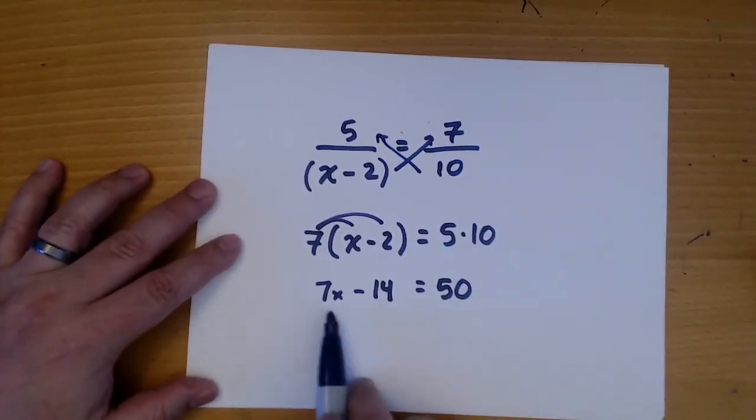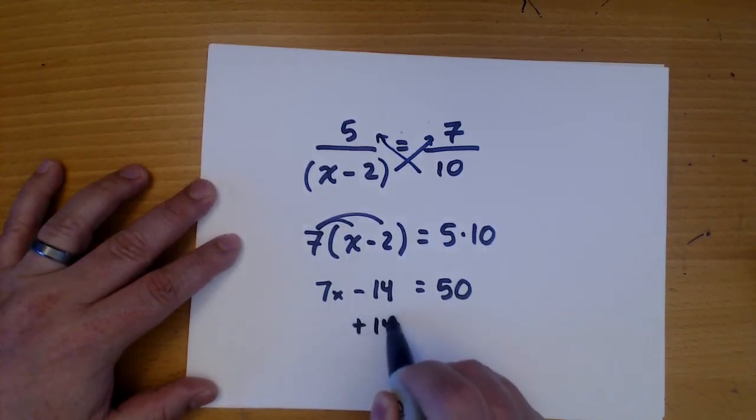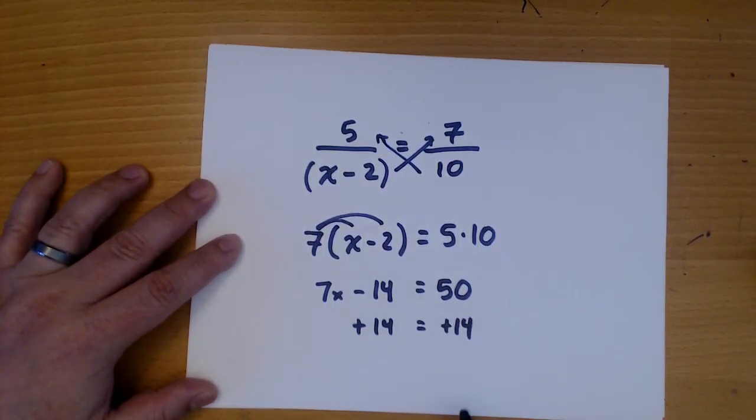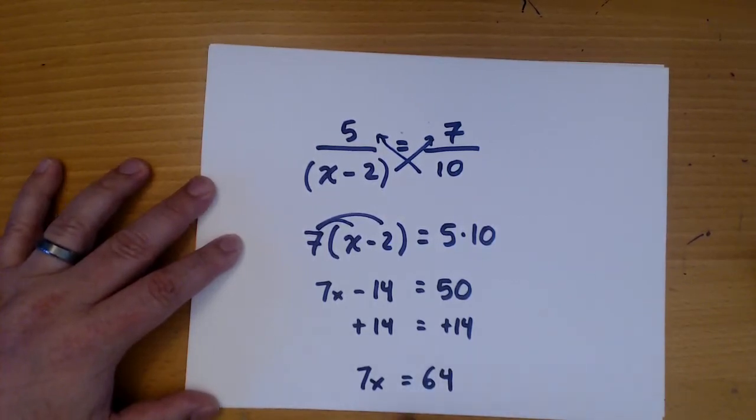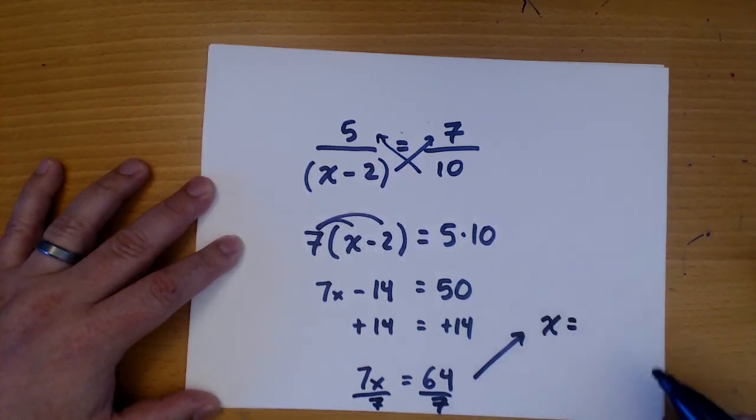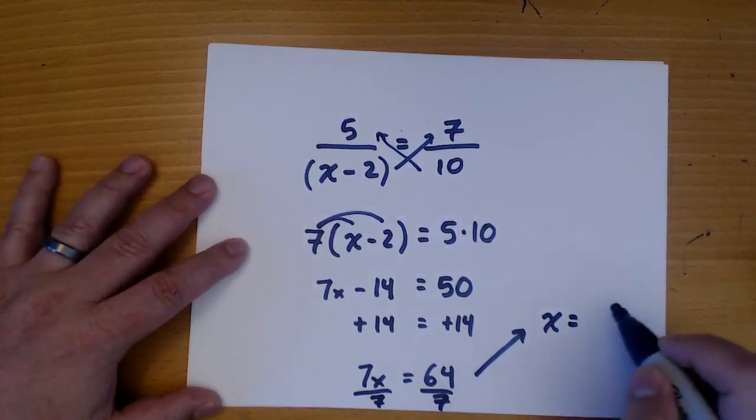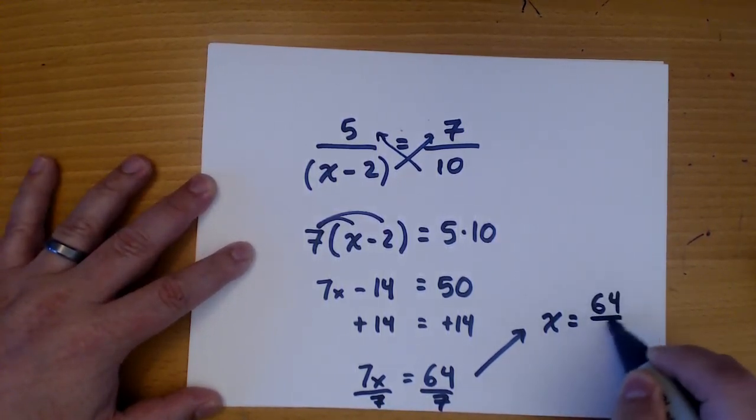Now we got to get rid of the 14. So it's currently a negative 14. So we're going to add 14 to both sides. And we get 7x is equal to 64. Now we divide both sides by 7. Now 64 isn't divisible by 7, so we leave it as 64 over 7.